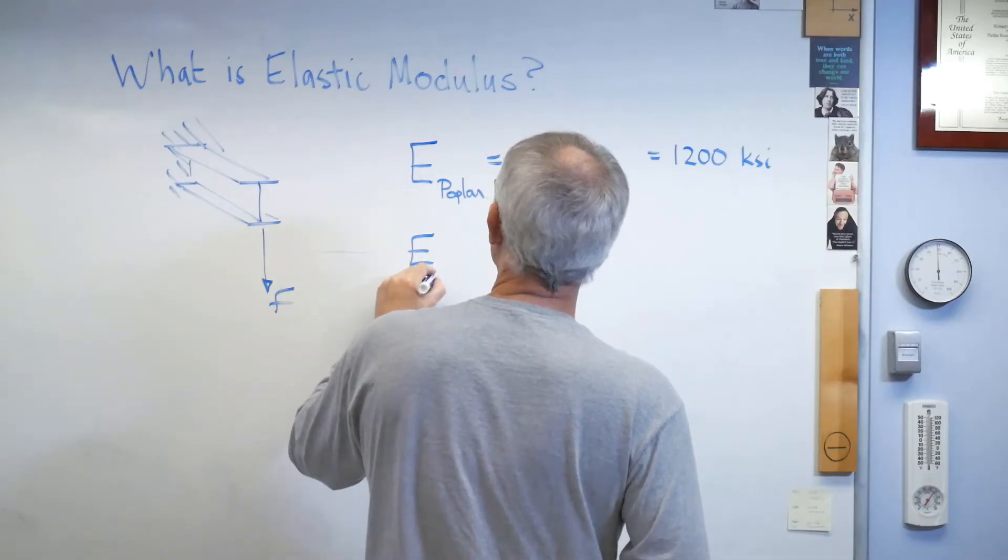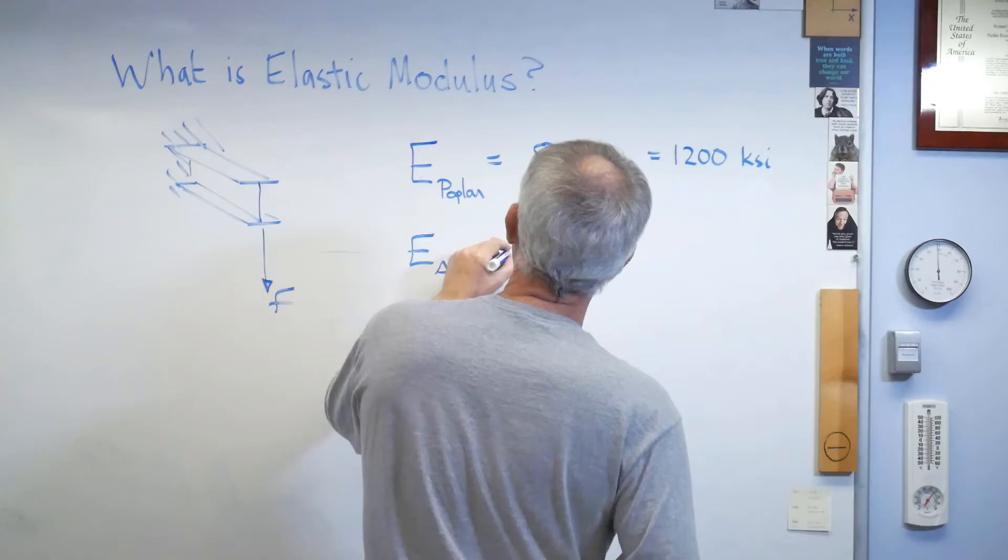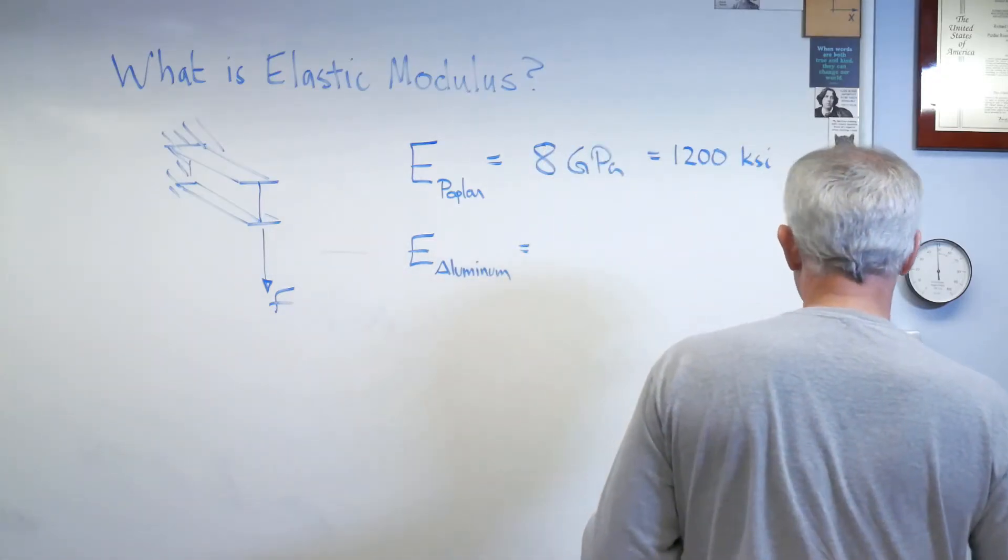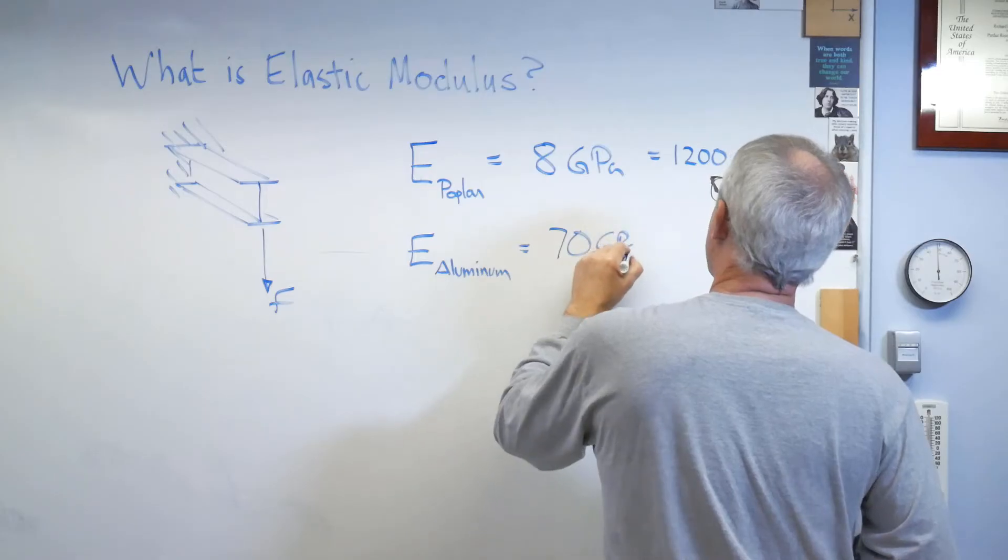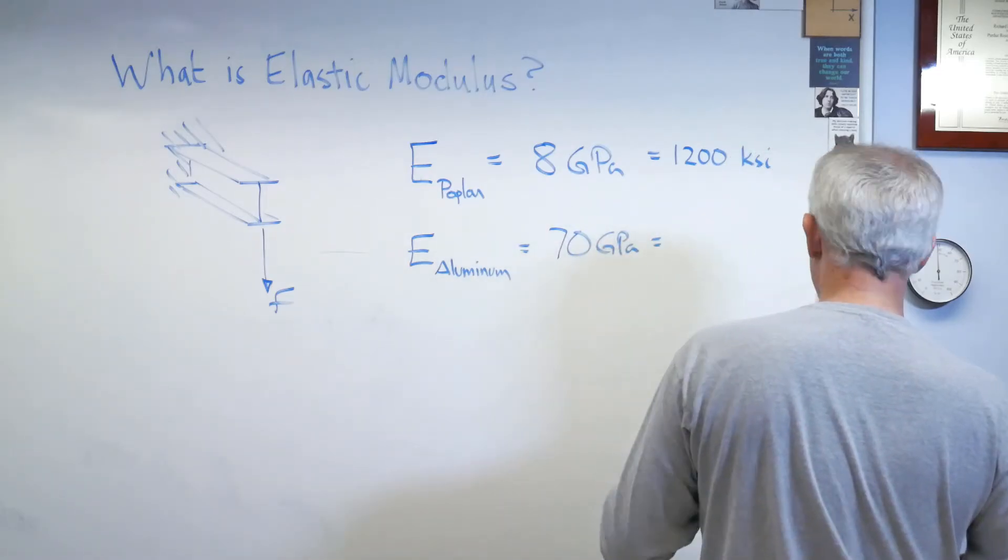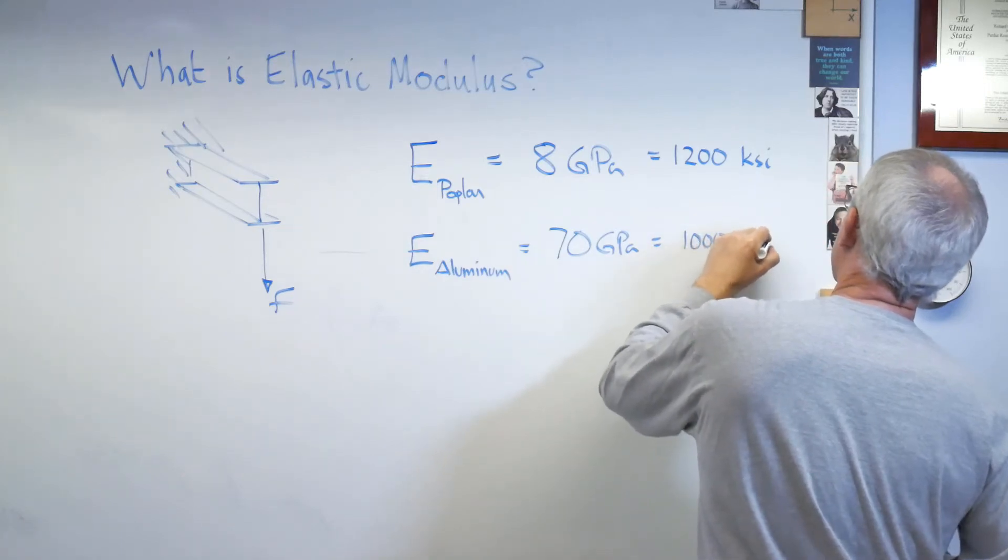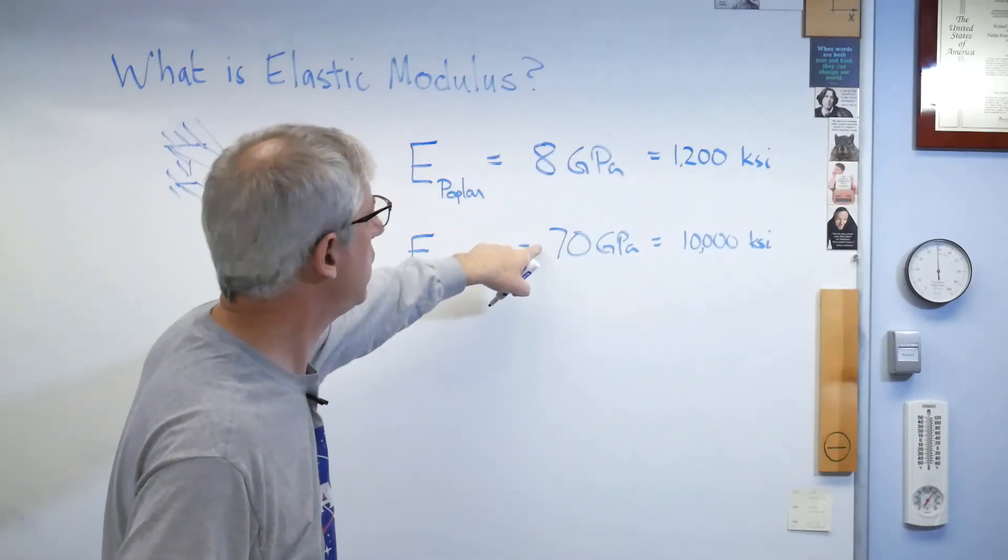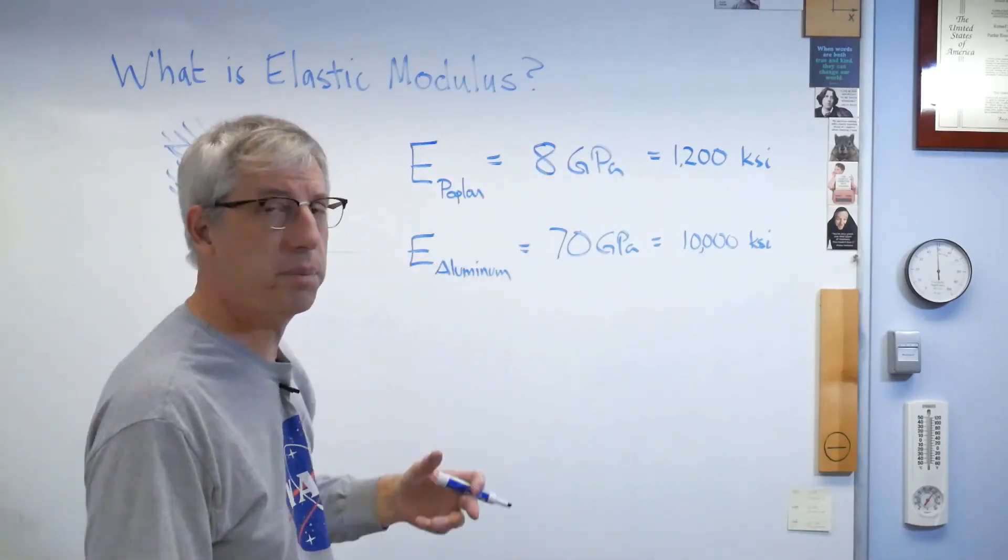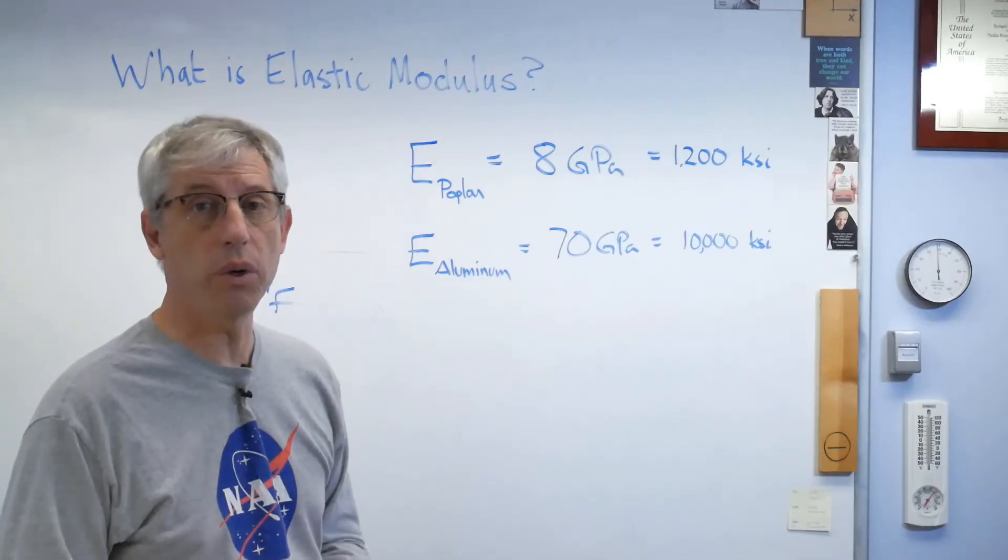Let's take E of the aluminum or aluminium, depending on where you are right now listening to this. And this is 70 gigapascals. A much bigger number. And in English units, that's about 10 million psi or 10,000 KSI. Much, much bigger number. That explains it. That's why it's so much harder to bend that aluminum rod than it was to bend that wooden rod.